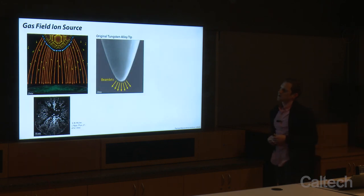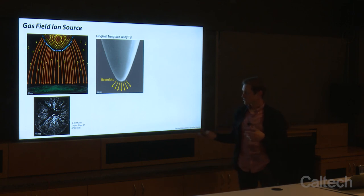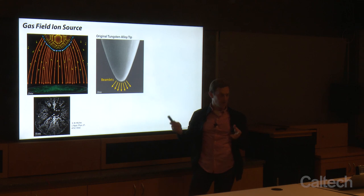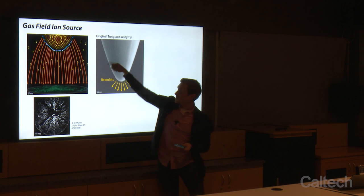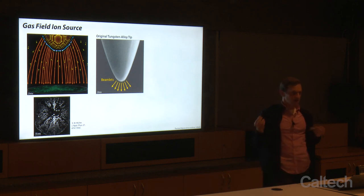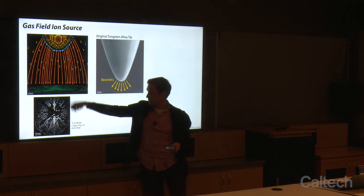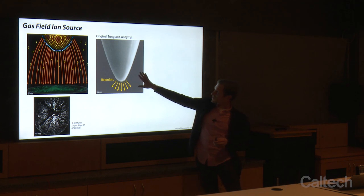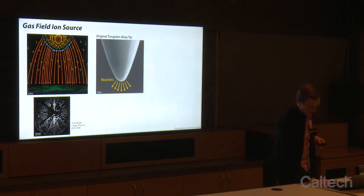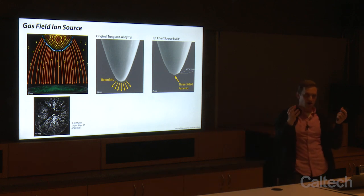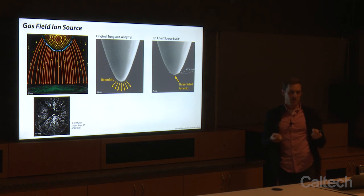Gas field ion sources have been around since the 1950s. This is actually the first time atoms were ever imaged. Muller had a tungsten needle, held it at positive potential, cooled it down, and flowed in helium gas. The gas would ionize at all the different atoms around the profile of the tip, and each atom formed a little beamlet of helium ions that went down to a fluorescent screen and lit it up — that's how they got that image of single atoms. We start with a tungsten tip in our system, but we'll make it sharper because we want as few beamlets as possible so all the gas is being ionized by just a few atoms, giving us maximum brightness from our source.